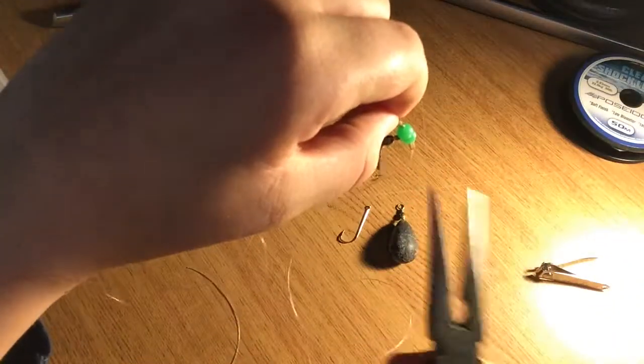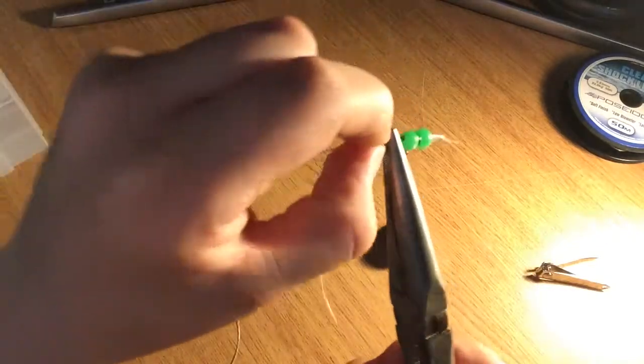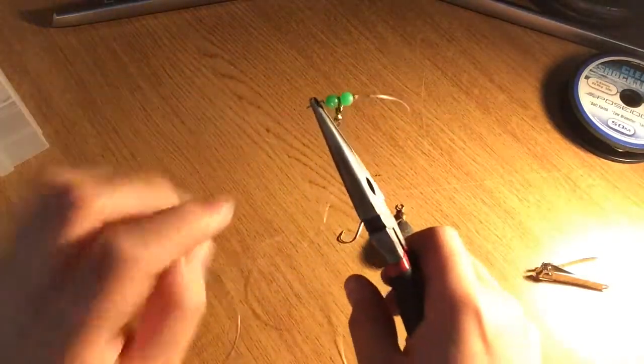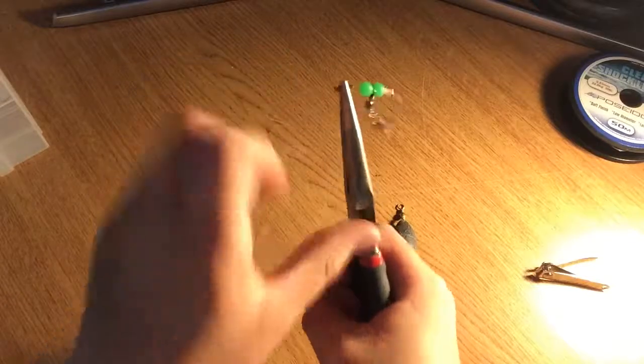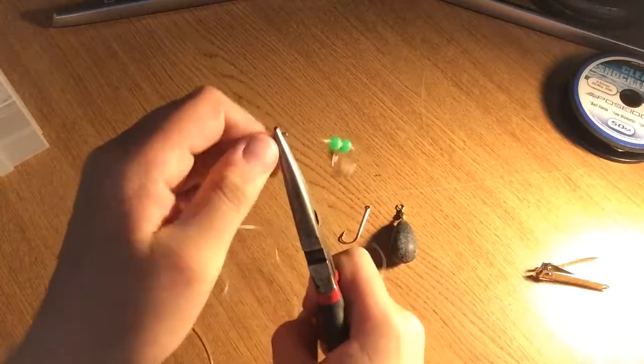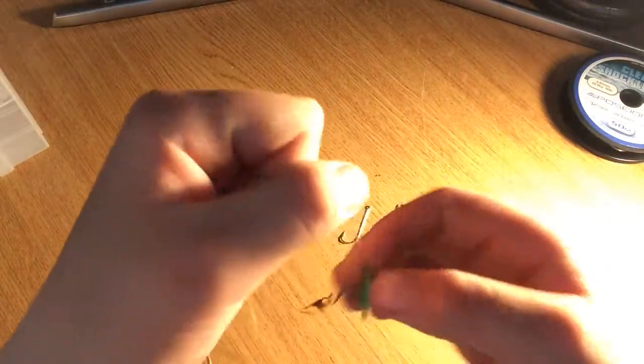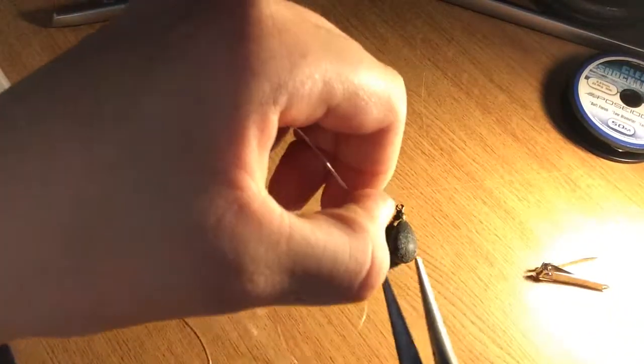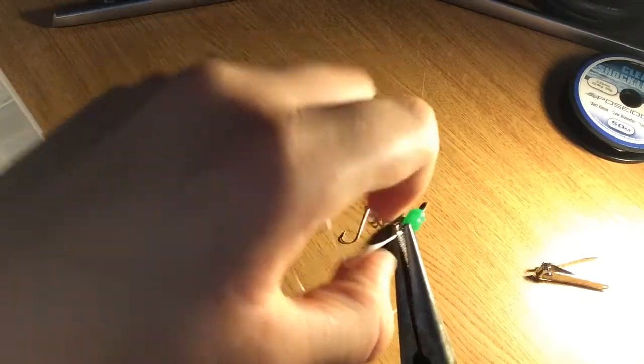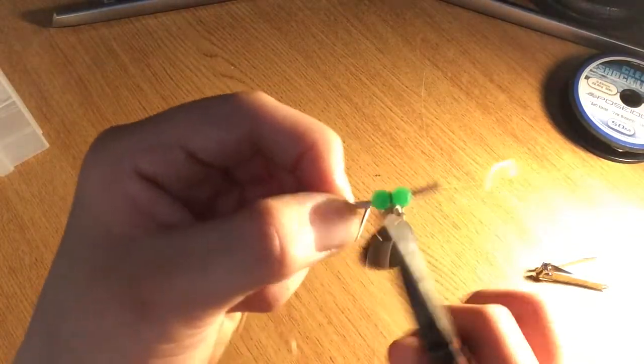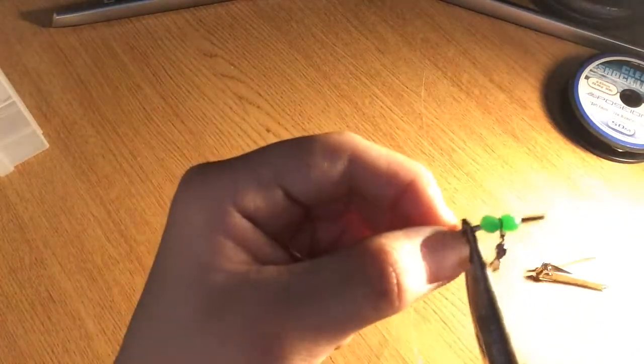Again, long nose pliers, crush this down as hard as you can. Don't worry about the line breaking because it ain't going to break. And there you should have it. Pull it down again and make sure it's not going anywhere. So make sure this isn't going to slide.